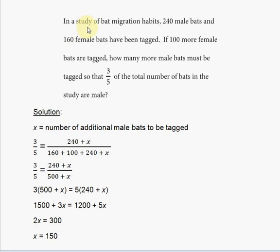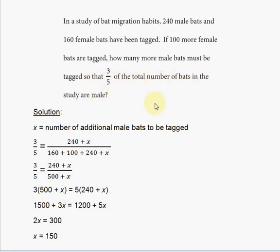In a study of bat migration habits, 240 male bats and 160 female bats have been tagged. If 100 more female bats are tagged, how many more male bats must be tagged so that three-fifths of the total number of bats in the study are male?